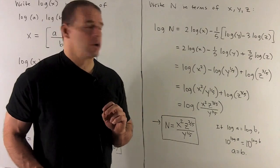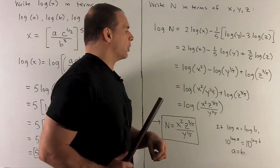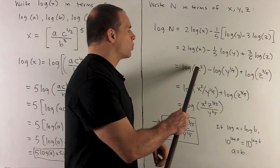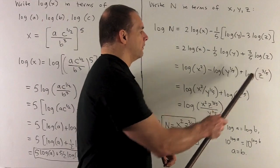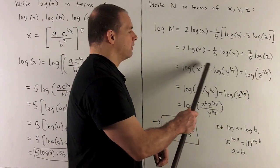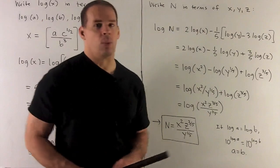We can take all those coefficients out in front and just put them up as an exponent on the inside. So we'll get an X squared, a Z to the 3 fifths. And here, I'll leave the minus sign out in front. We just push that up to get Y to the 1 fifth.